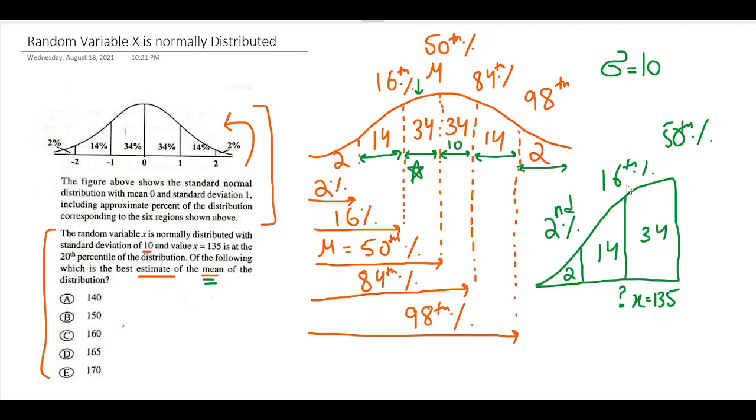So let's think about this. If this is the 20th—let's just for the sake of argument draw it over here—this is the 20th percentile. Let's write it over here. And if I add one standard deviation, a 10, into it, I'm gonna get 145.